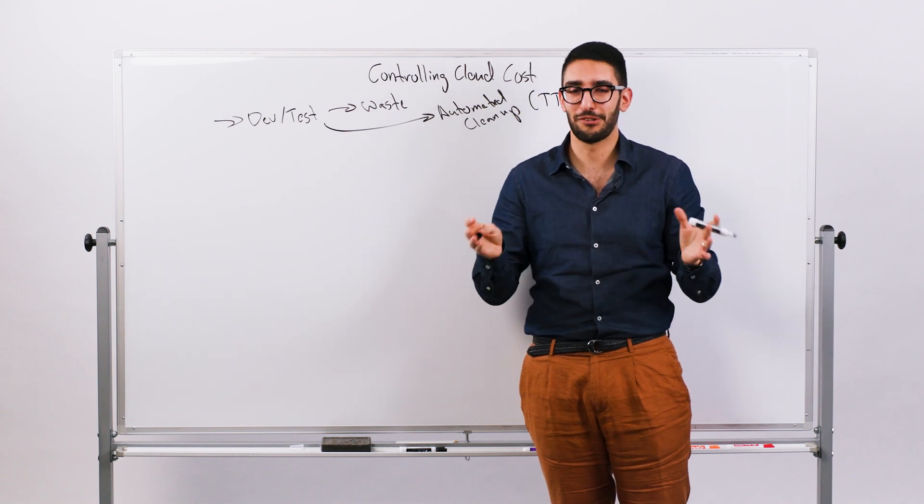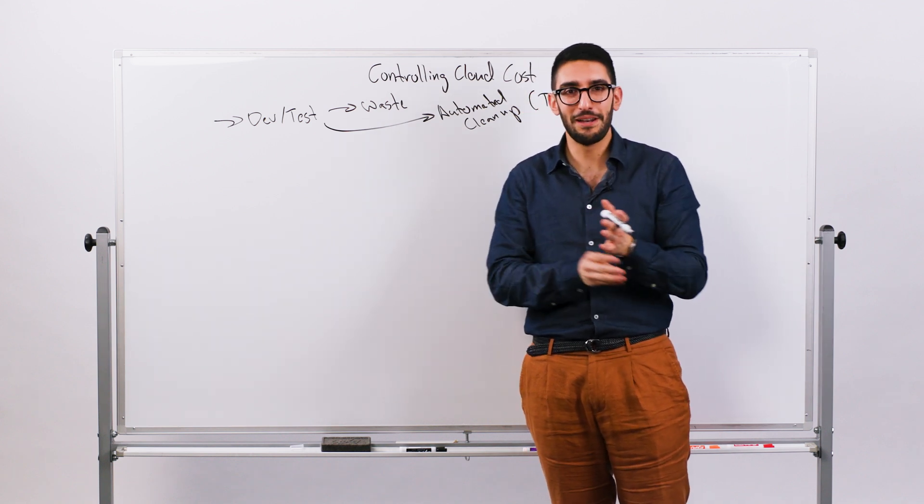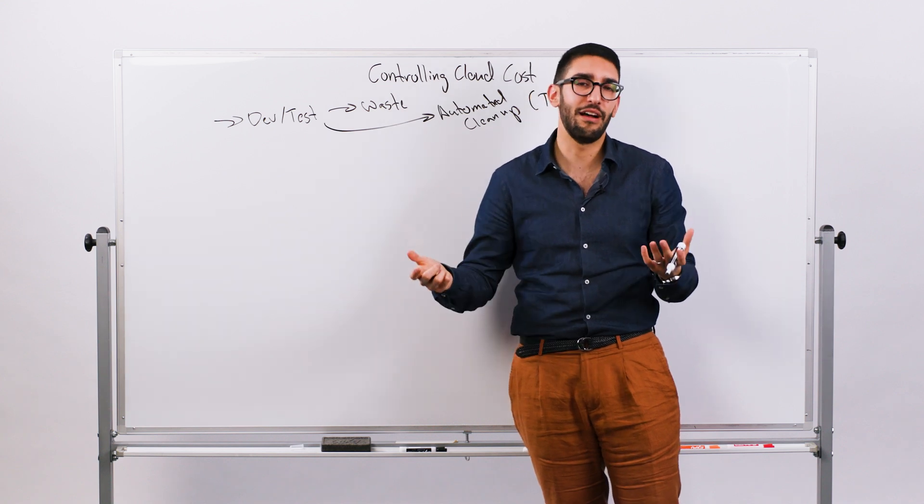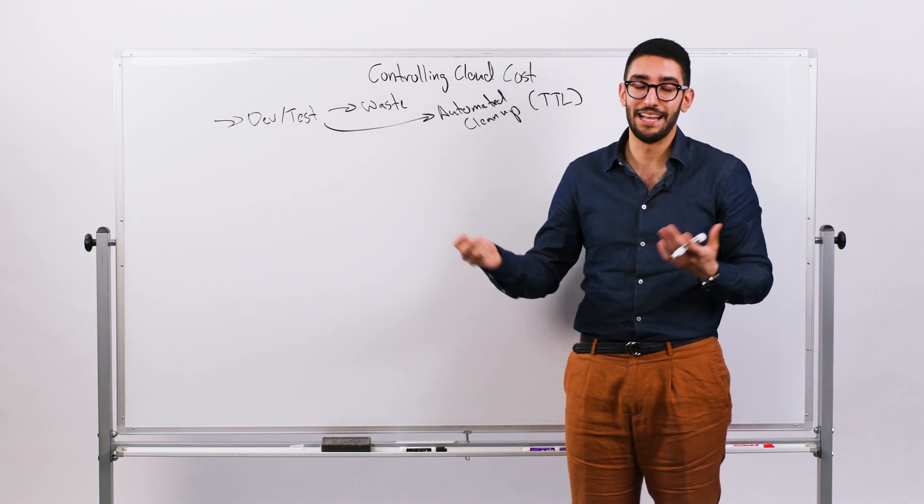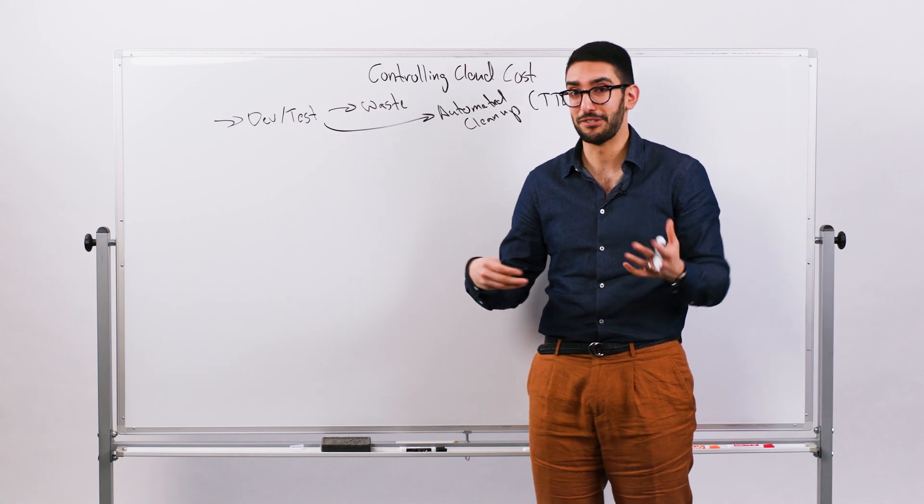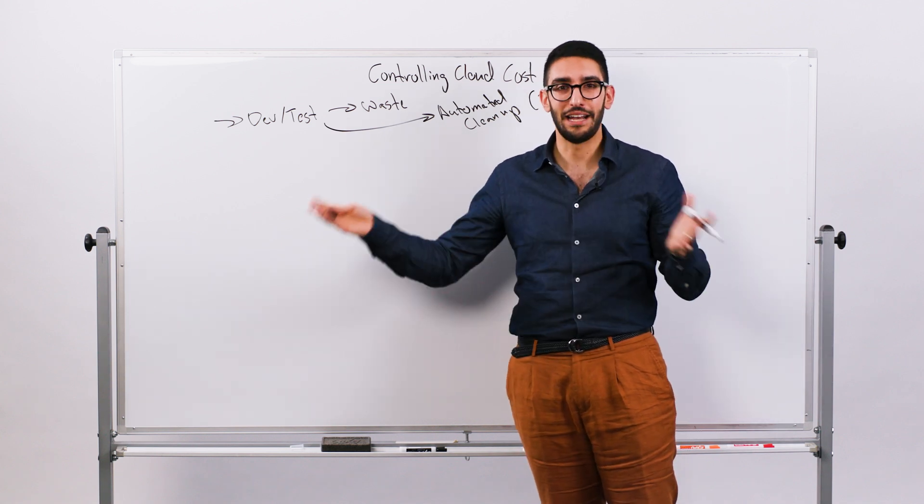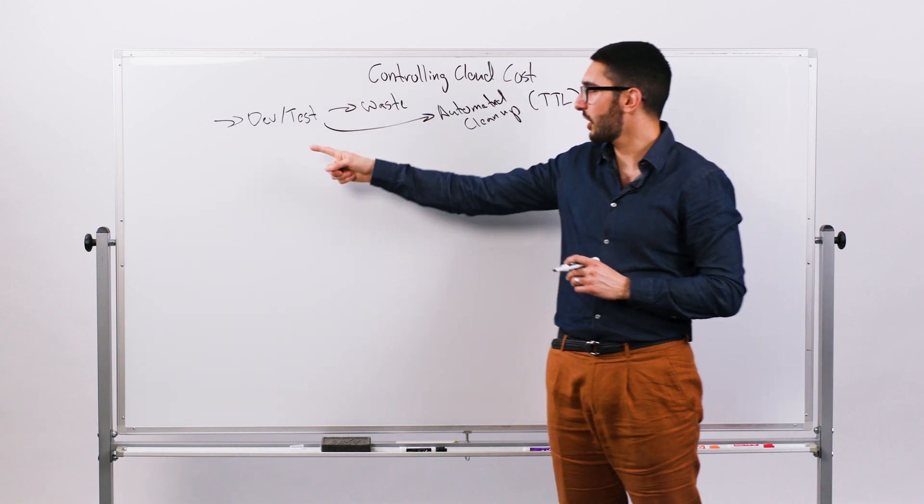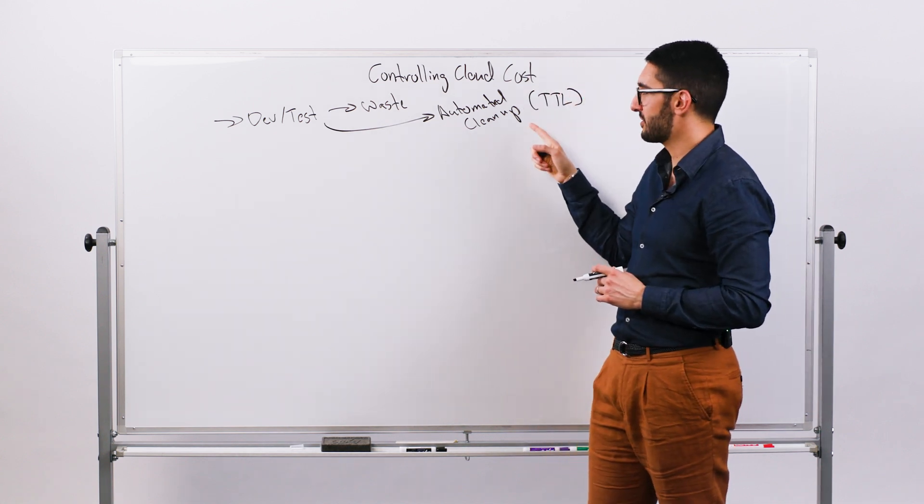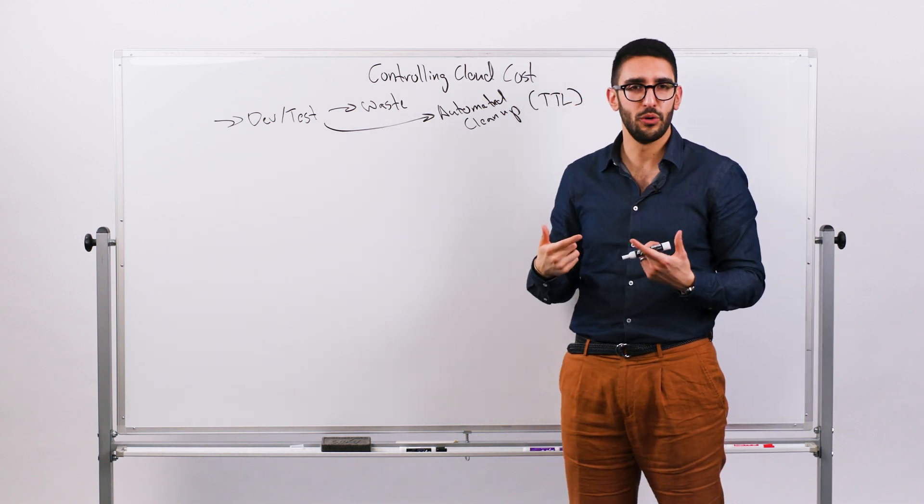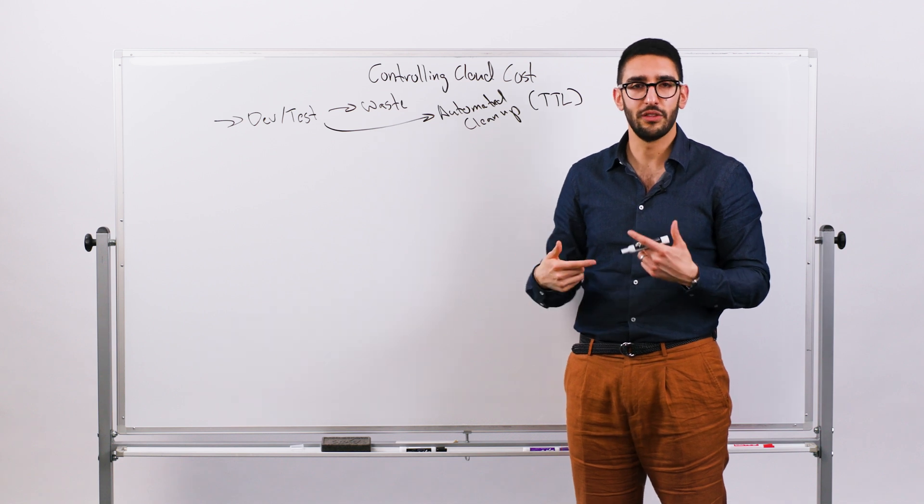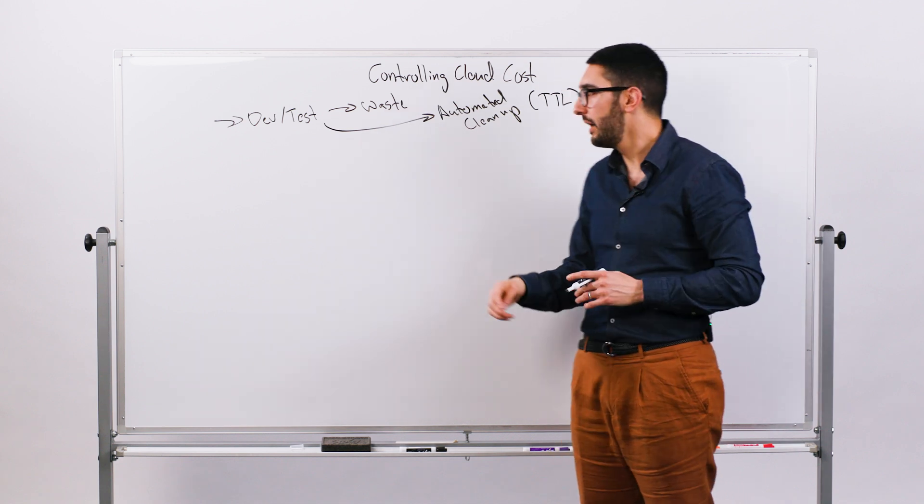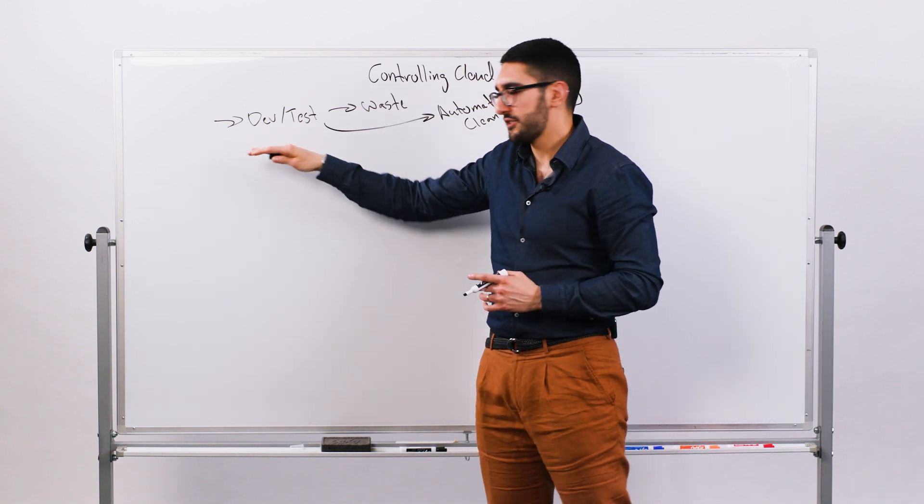There's an automated process that destroys environments after a week if they're still running. Or Bob left the company and nobody realized Bob's development environment is still running 90 days later—you've spent a quarter paying for completely unused resources. The core strategy for dev test is thinking about programmatic approaches to applying time to live and doing automated cleanup, so you're not paying for those resources.